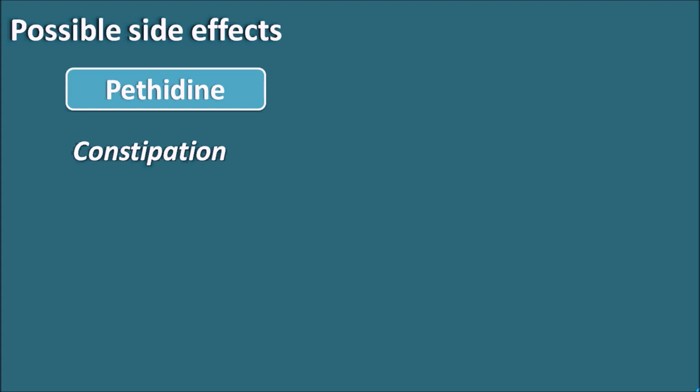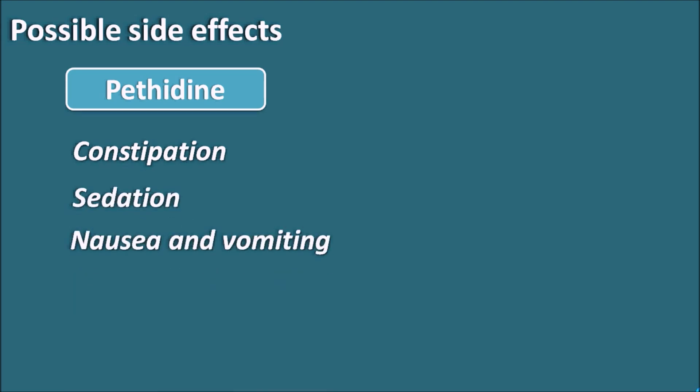Since Pethidine is an opioid acting like morphine, it produces similar side effects: constipation, sedation, nausea and vomiting, and difficulty in breathing. When Pethidine levels accumulate it can produce respiratory depression.